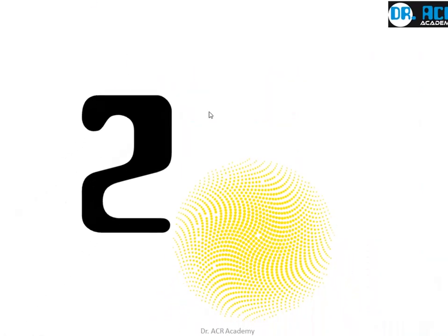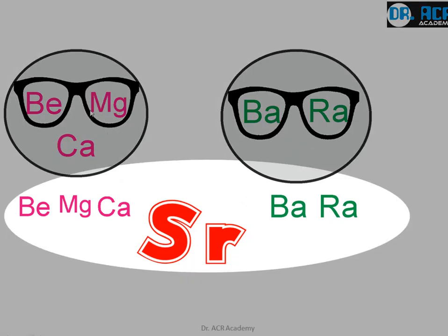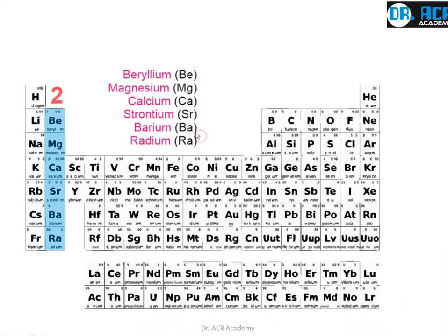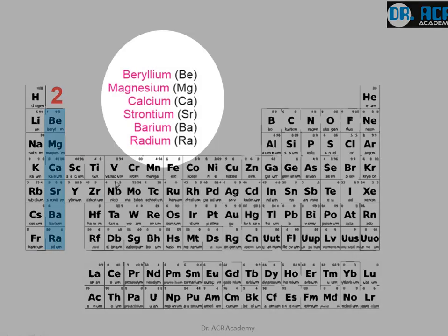Now we come to the second group. This is about two friends, Bemka and Bhera. Due to a misunderstanding, Bemka scolded Bhera and Bhera started crying. Bemka understood and realized his mistake, then told a story to Bhera — Bemka, sorry Bhera. This is how it is linked to the periodic table, and these are its real names.